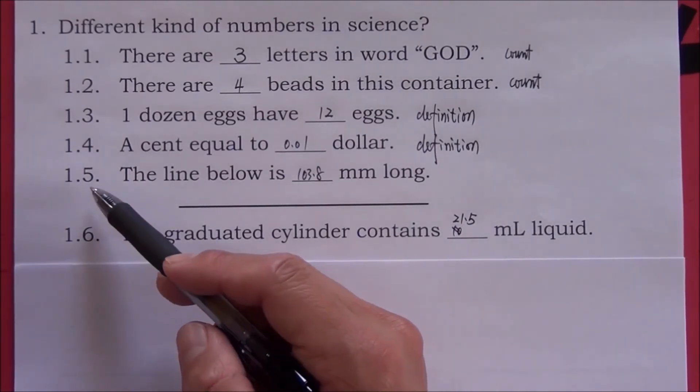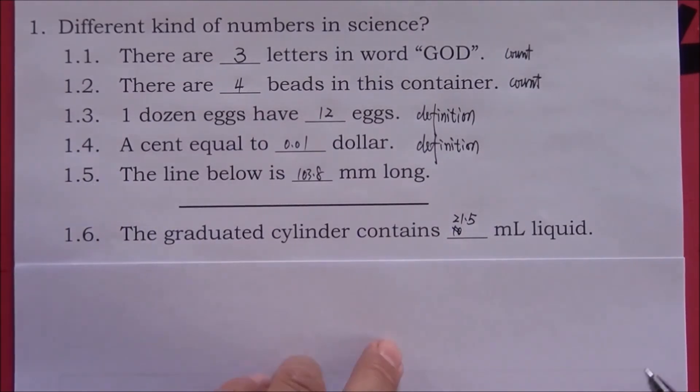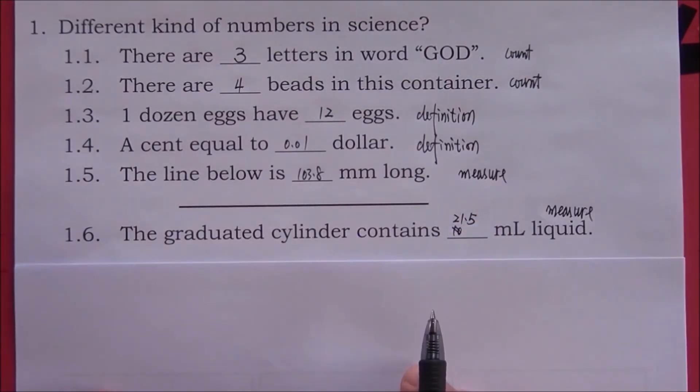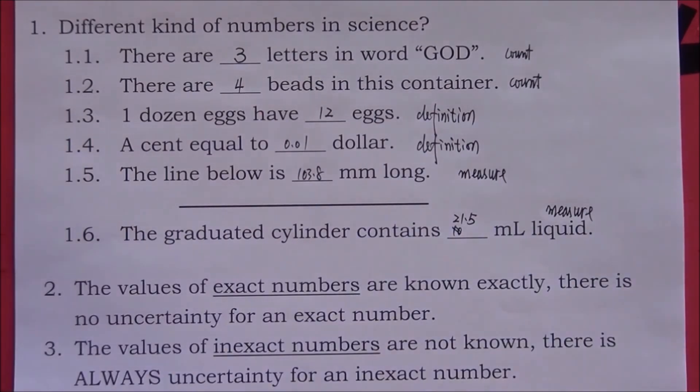Number five and number six are from measurements. Any number from measurements will have uncertainty, and we call them inexact numbers.